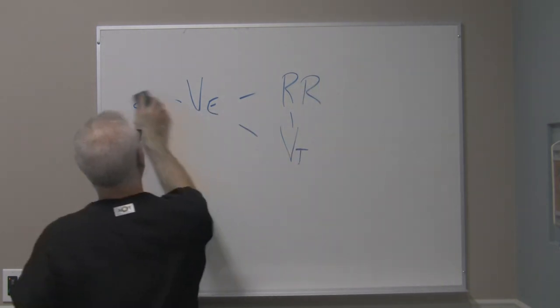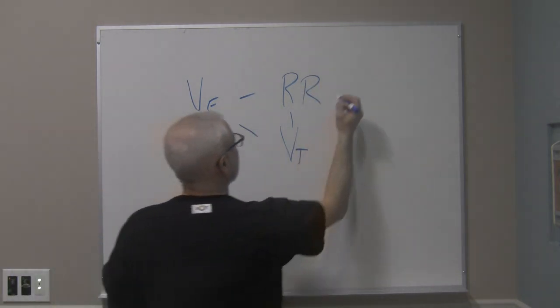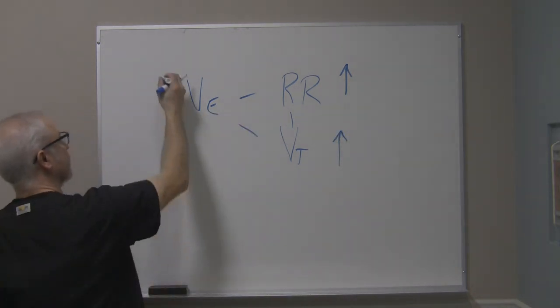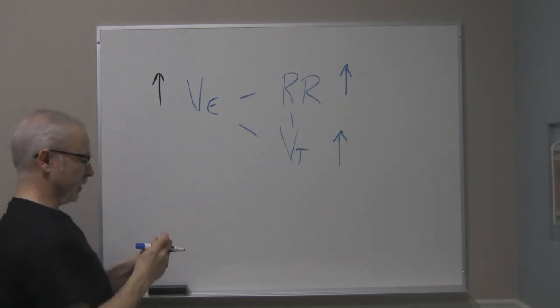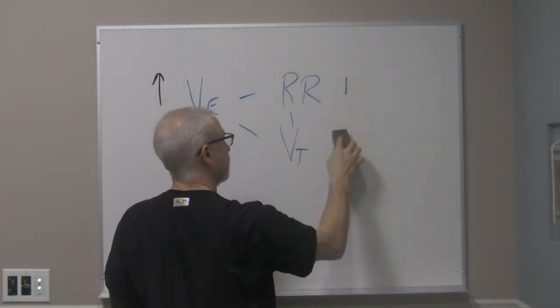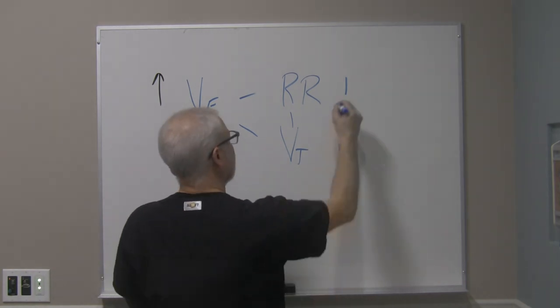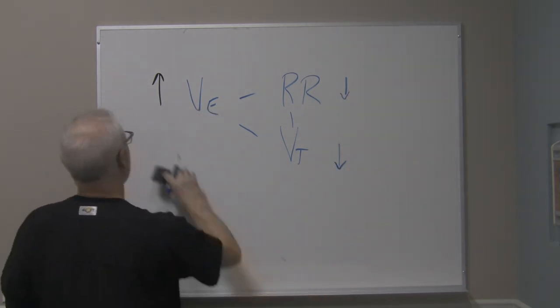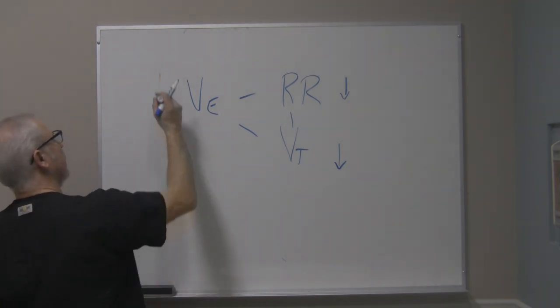Lastly, if the respiratory rate goes up and tidal volume goes up, you should see a corresponding increase in the minute ventilation. If the respiratory rate drops and the tidal volume also drops, you'll see now a drop in the minute ventilation.